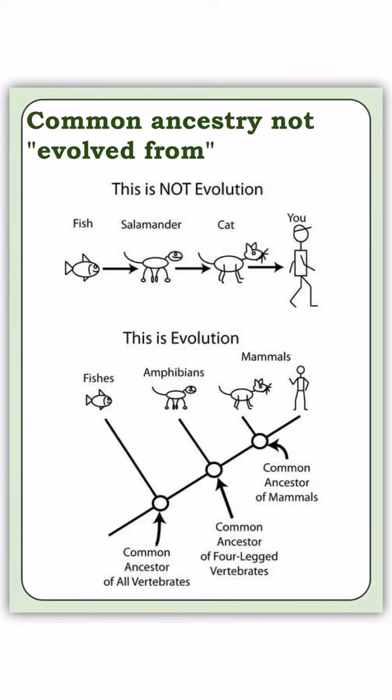And so here's the evolution take on that. This is not evolution going from fish to salamander to cat to you. This is a better representation of evolution showing a common ancestor for all backboned animals, all vertebrates, which includes fish, and then a common ancestor for four-legged vertebrates, which includes amphibians and also includes mammals and you. So common ancestor of all mammals. Okay. You did not evolve from a cat or a bear. You did not evolve from a chimpanzee.